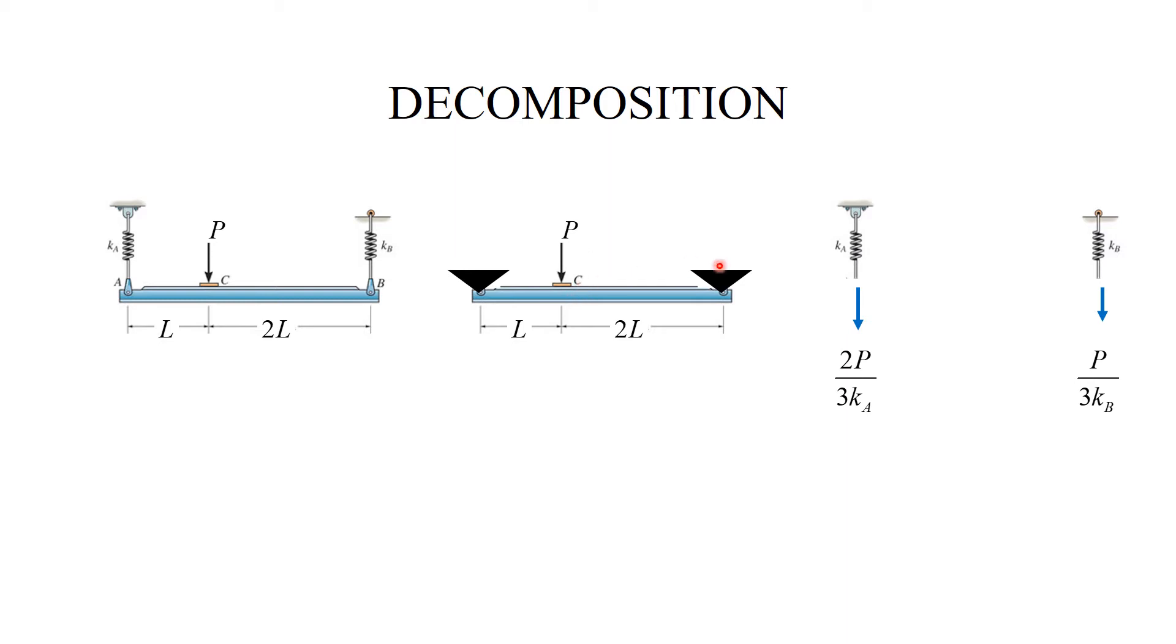The second mode is the points A and B displaced because the springs stretched. And this mode has nothing to do with bending of the beam. So, in this mode, the springs do not stretch. In this mode, the beam does not deform. So let us analyze these two modes separately.